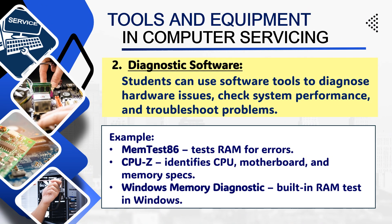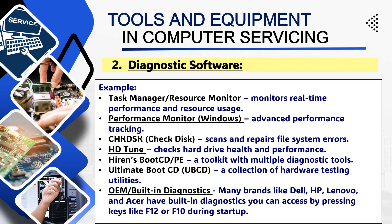Diagnostic software: Students can use software tools to diagnose hardware issues, check system performance, and troubleshoot problems. Examples include: MEM Test 86 for testing RAM for errors; CPU-Z to identify CPU, motherboard, and memory specs; Windows Memory Diagnostic — built-in RAM test in Windows; Task Manager and Resource Monitor to monitor real-time performance and resource usage; Performance Monitor for advanced performance tracking; Check Disk to scan and repair file system errors; HD Tune to check hard drive health and performance; Hiren's Boot CD PE — a toolkit with multiple diagnostic tools; Ultimate Boot CD (UBCD) — a collection of hardware testing utilities; and OEM/built-in diagnostics from brands like Dell and HP, accessible by pressing F10 or F12.